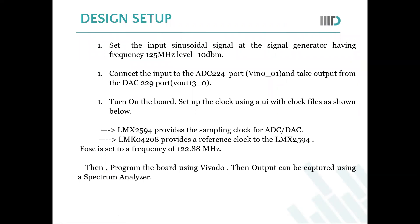For the design setup, we need to set the signal generator to a frequency of 125 MHz at a level of minus 10 dBm. First, connect the input to the ADC port and take output from the DAC port. Then turn on the board and set the clock. There are two ICs: the LMX2594 for the ADC and DAC sampling clock, and the LMK04208 which provides the reference clock to the LMX2594.